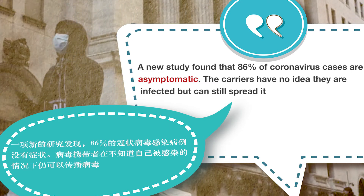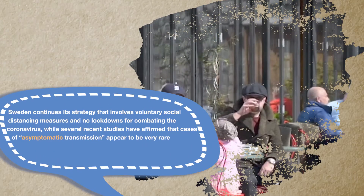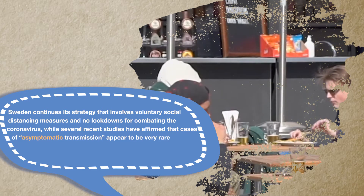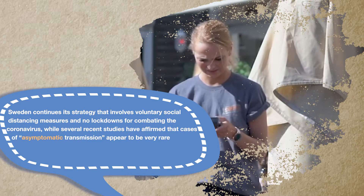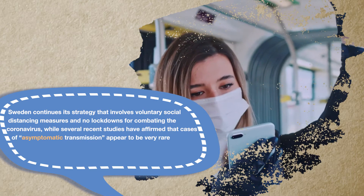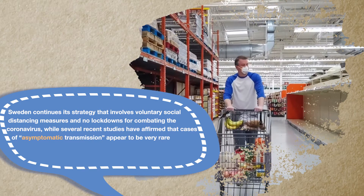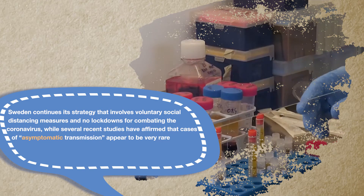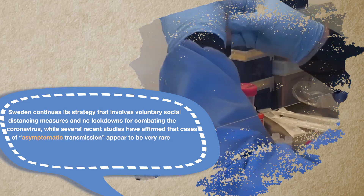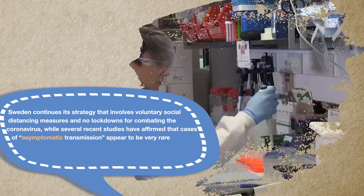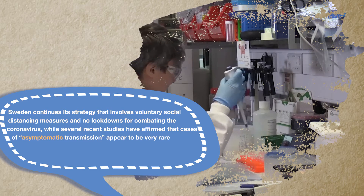病毒携带者在不知道自己被感染的情况下仍可以传播病毒。Sweden continues its strategy that involves voluntary social distancing measures and no lockdowns for combating the coronavirus, while several recent studies have affirmed that cases of asymptomatic transmission appear to be very rare.